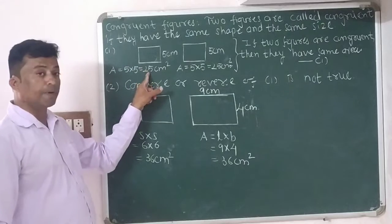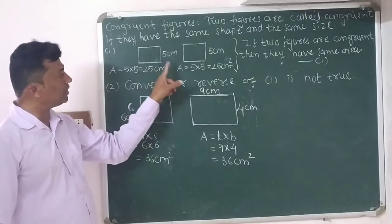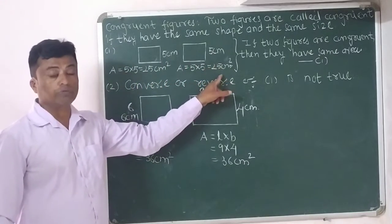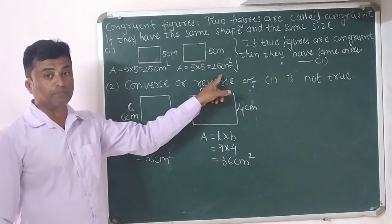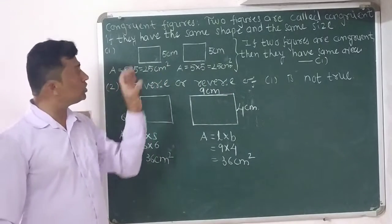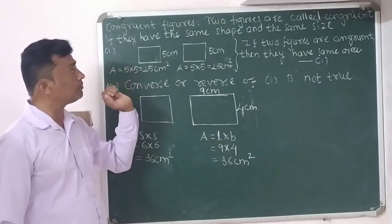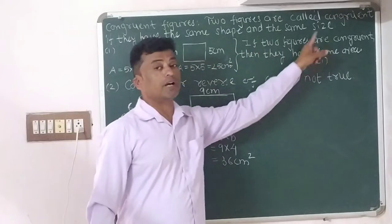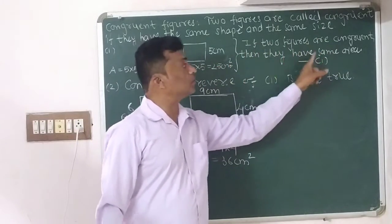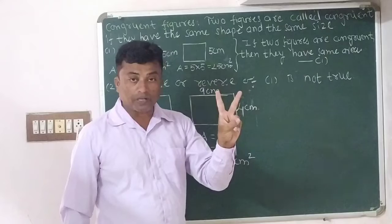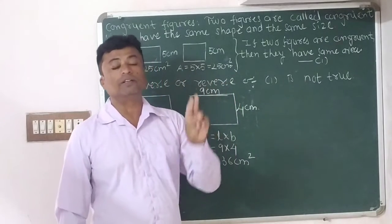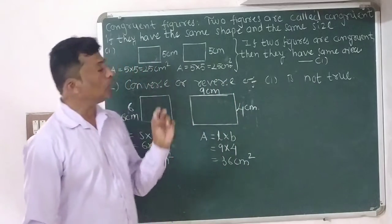Area of square one is 25 centimeter square and area of square two is also 25 centimeter square. So what is the conclusion for example number one? If two figures are congruent, then they have the same area. If two figures are congruent to each other, then they have the same area.